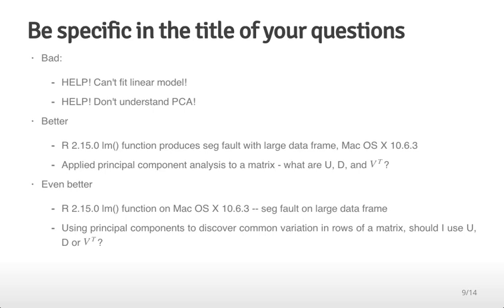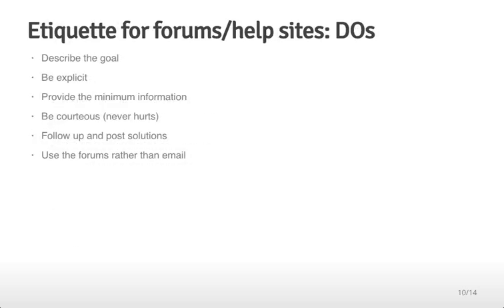Even better posts for the mailing lists start off with all the relevant information for R, such as the version number and the operating system, and then very briefly summarize exactly what the problem is, it's a seg fault on a large data frame. This is a little bit better because it's a little bit more concise, and it gives people, at a glance, an easier way to understand the information that you're asking about. Similarly, you can ask, using principal components to discover common variation in rows of a matrix, should I use U, D, or V transpose? This question is much more specific than the previous question, and so people won't have to ask you why you're trying to interpret a particular variable.